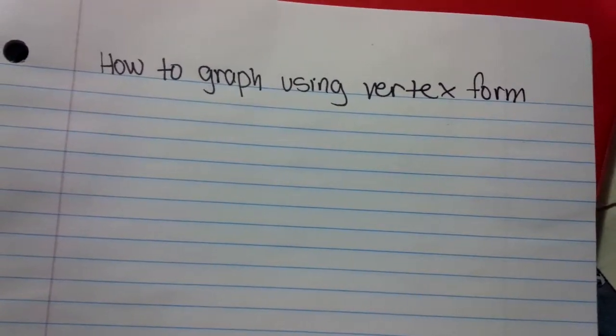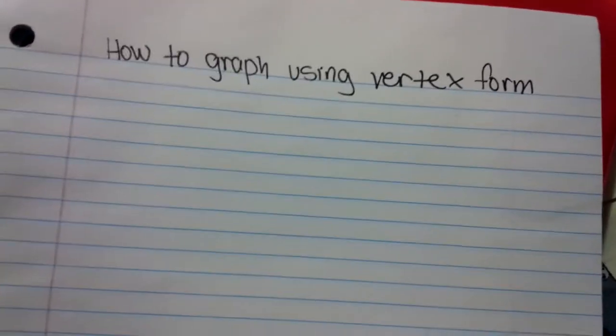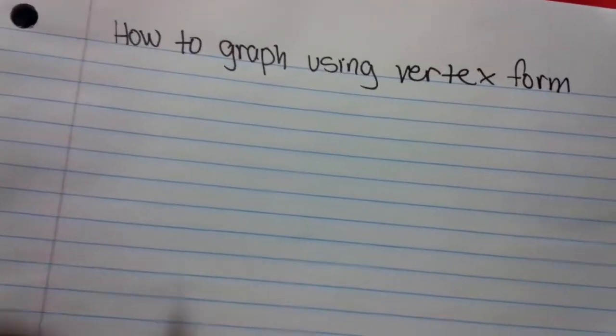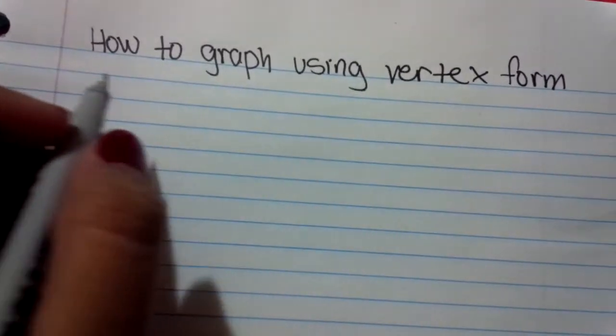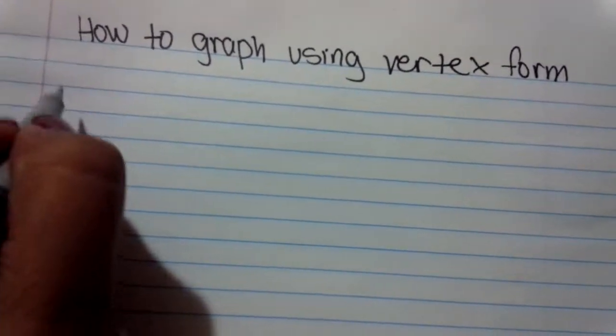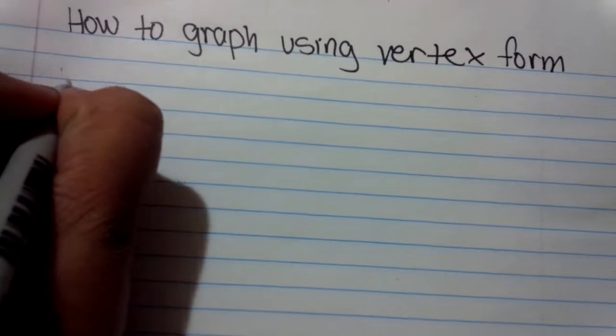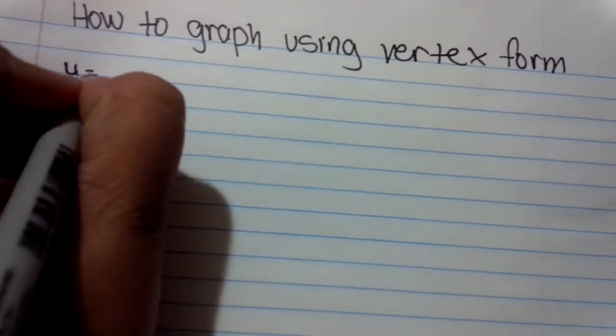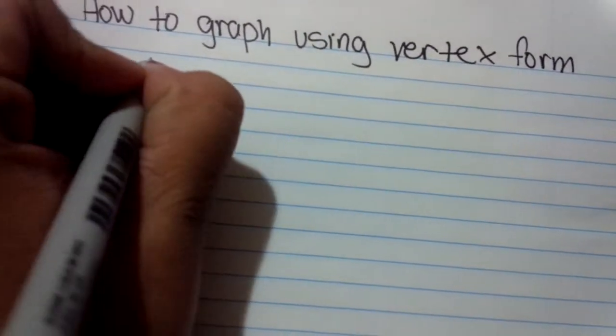Hi guys, today we're going to be learning how to graph using the vertex form. We have to know what the formula is for the vertex form, which is y equals a times x minus h, squared, plus k.